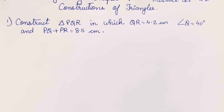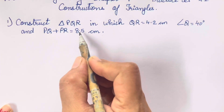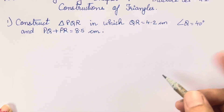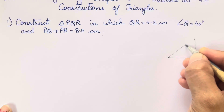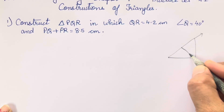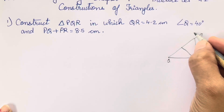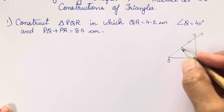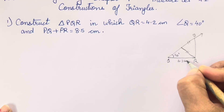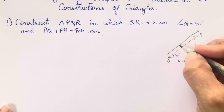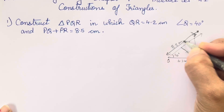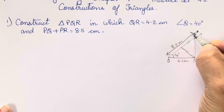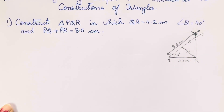Construct triangle PQR in which QR is 4.2 cm, angle Q is 40 degrees, and PQ plus QR is 8.5 cm. First we will construct the rough diagram so that you will have an idea as to what to draw. This figure we have to draw — QRS — where the angle is 40 degrees, QR is 4.2 cm, and the complete line till S is going to be 8.5 cm.